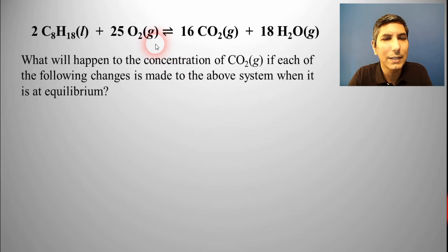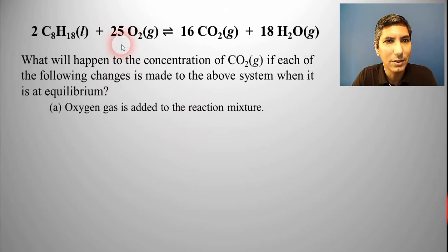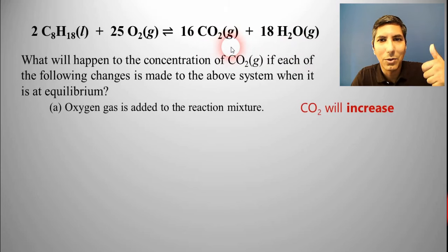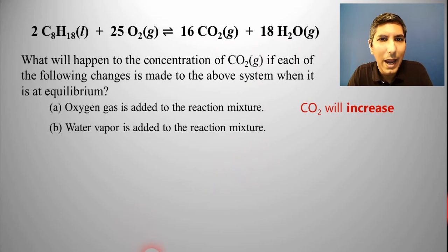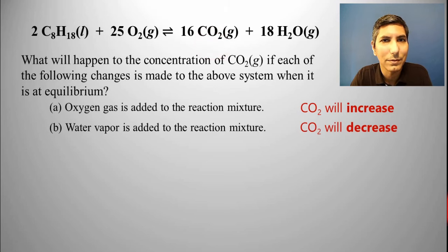Let's take a look at this process and find out what's going to happen to the concentration of carbon dioxide gas if each of the following changes is made at equilibrium. What happens if we add oxygen gas? We're adding oxygen, so it's going to shift in the other direction — that means carbon dioxide, along with water vapor, are going to increase. What's going to happen if we add water vapor? If we add water vapor, it's going to cause the reaction to shift in the other direction, so we'll make more oxygen. But we're going to decrease the water and the carbon dioxide — it will go down.